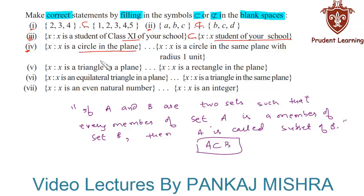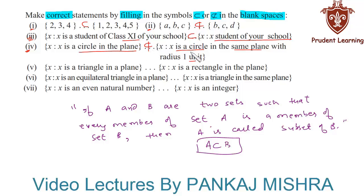In the fourth section, the first set is {x : x is a circle in the plane} and the second set is {x : x is a circle in the same plane with radius 1 unit}. The first set contains all circles with different radii, while the second set contains only circles with radius 1 unit. Not all elements of the first set are present in the second set, so the first set is not a subset of the second set.